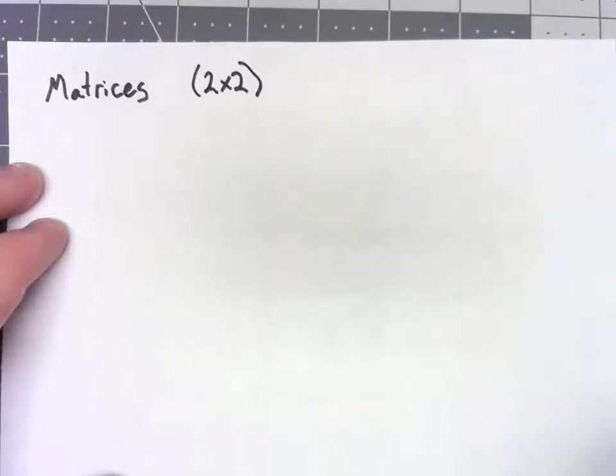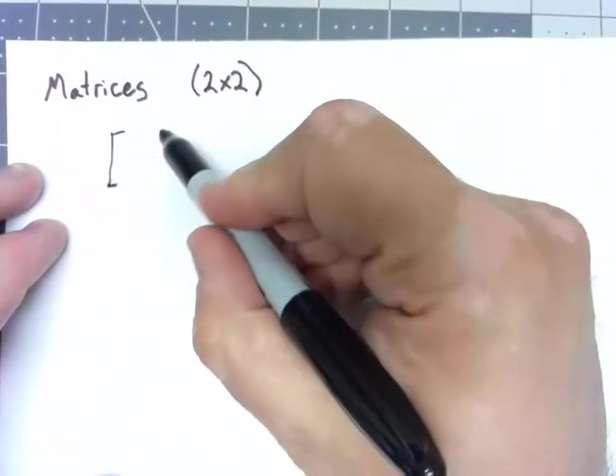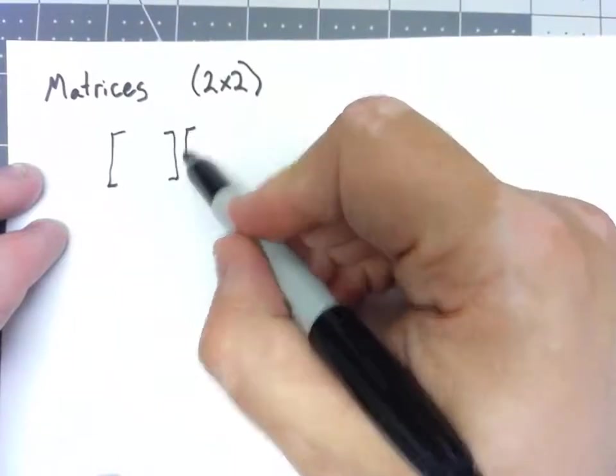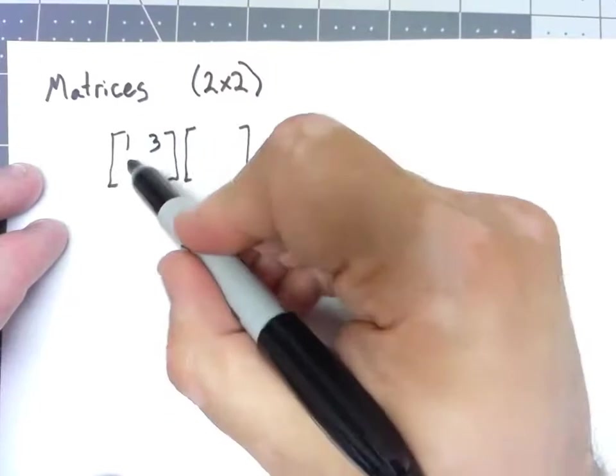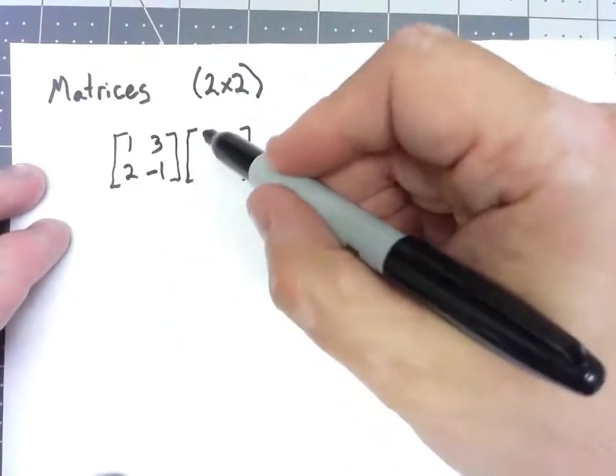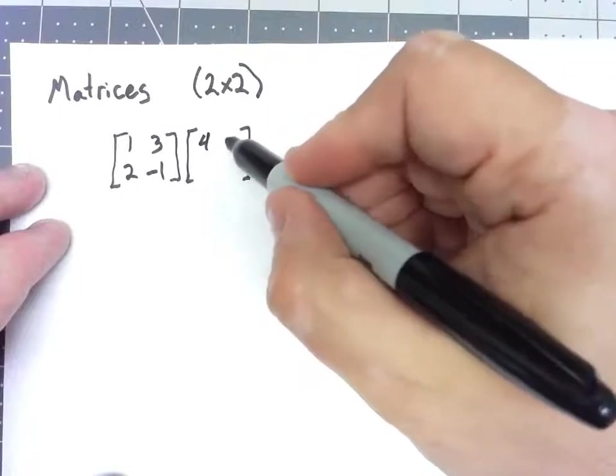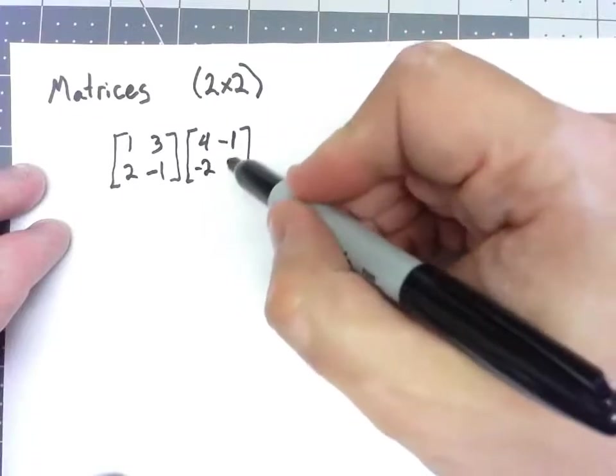Now, to understand this, we need to remember how matrix multiplication works. So I'm just going to go through a simple little matrix multiplication example. Let's say I've got the matrix 1, 3, 2, negative 1, times the matrix 4, negative 1, negative 2, 5.